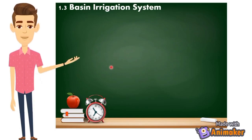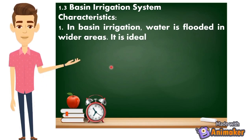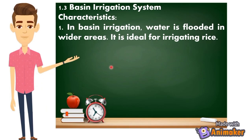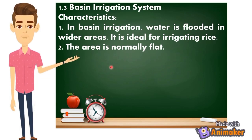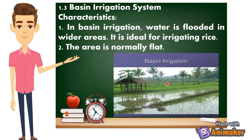Next, 1.3 Basin Irrigation System. In basin irrigation, water is flooded in wider areas and it is ideal for irrigating rice — it's almost the same with surface irrigation but kahit flooded sya in wider areas, no problem. The area is normally flat — make sure flat yung area natin, hindi sya slope or diagonal ang pagkakagawa niya. This is a sample of basin irrigation applied in a rice field.